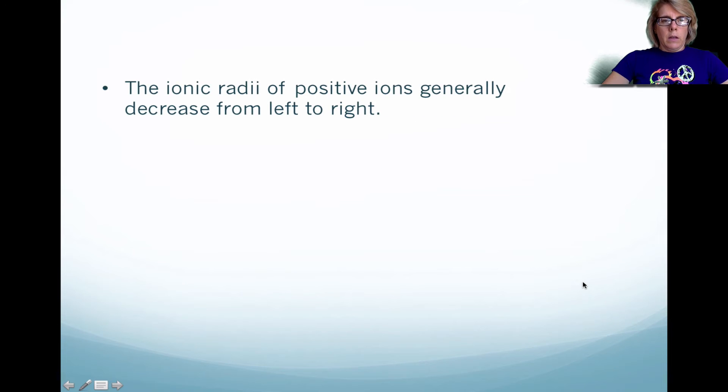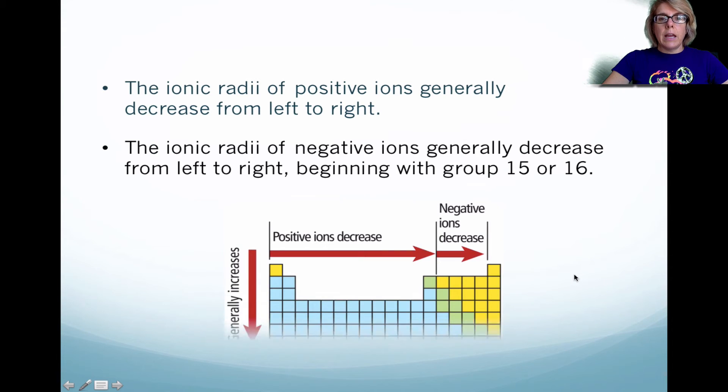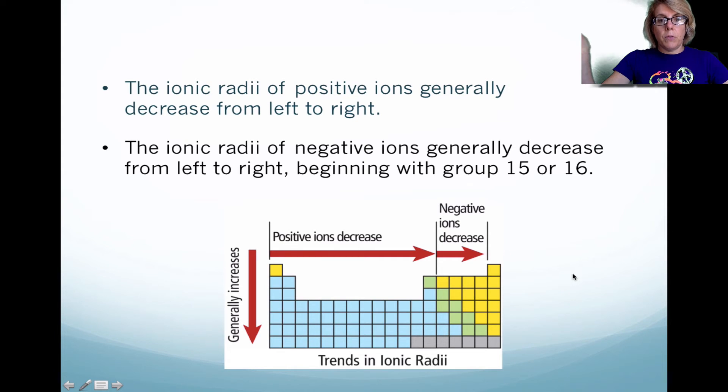Ionic radii for positive ions decrease left to right, and negative ions decrease from left to right. These are a couple generalized trends that you probably need to know. Positive ions decrease, and negative ions actually get smaller as you add electrons.